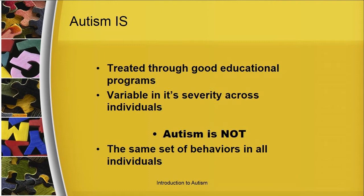Even though autism is defined by observing behaviors, the same set of behaviors is not found in every person with autism. There is no one universal behavior. Furthermore, autism is a spectrum disorder, meaning an individual may be mildly autistic, severely autistic, or at any point in between. According to the latest statistics reported by the Centers for Disease Control and Prevention, one in 88 children born will experience an autism spectrum disorder. When I began my career with Project Access in 1991, autism was considered a low incidence disability, and the numbers were one in 10,000 live births.